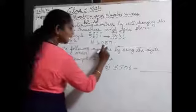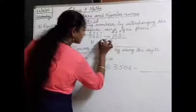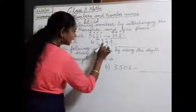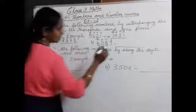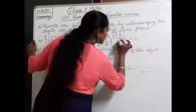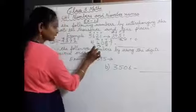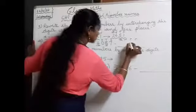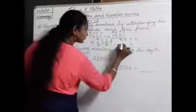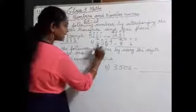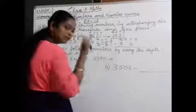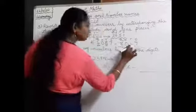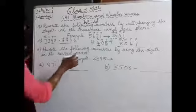Part B: 4087. We are going to interchange tens place and thousands place. Thousands place has 4 — that will go to tens place. And 8 will go to thousands place. So 8 and 4 are interchanged. Hundreds place and ones place will be the same: 0 and 7. After interchanging, we got 8047.